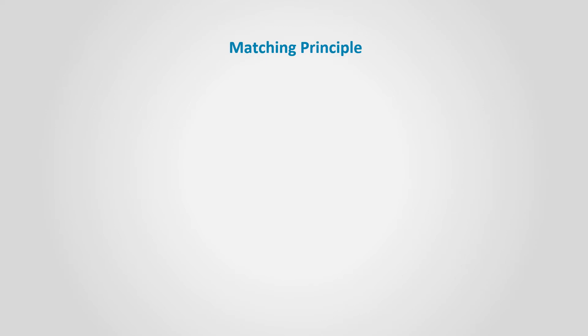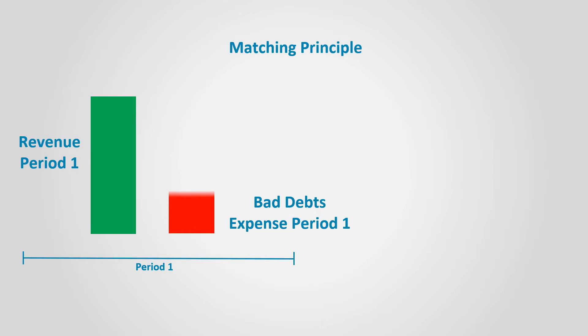Remember that we have to care about the matching principle. The matching principle indicates that revenues of a period should be matched with expenses of the same period that are related to the generation of such revenue. In this case, there is no violation of the matching principle, since Customer B defaulted in the same period.